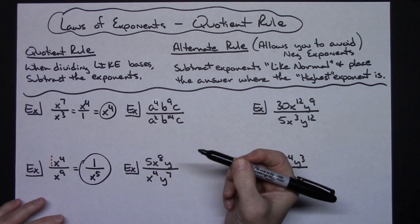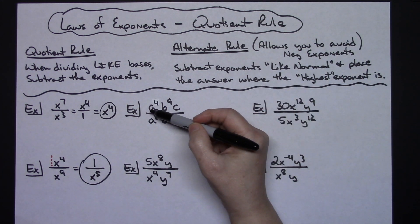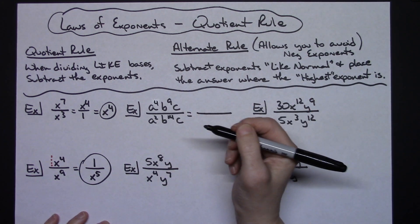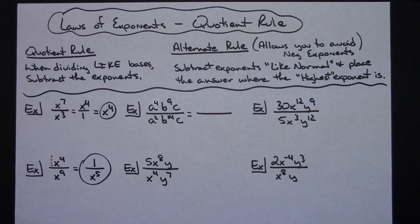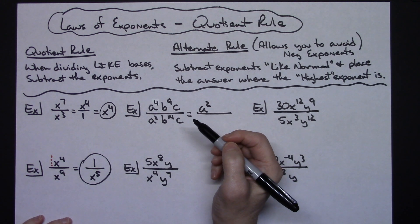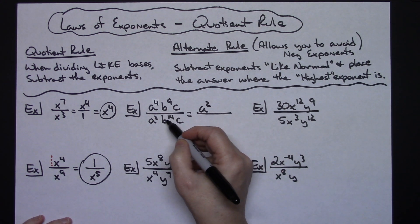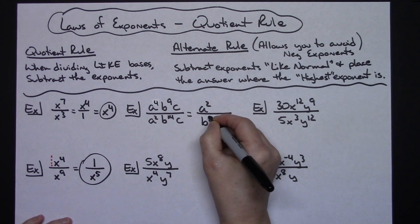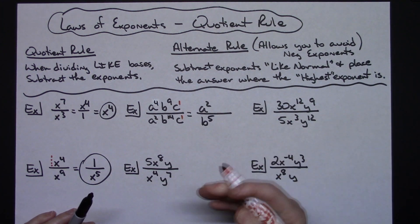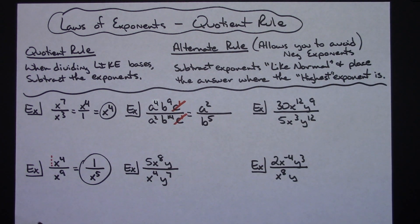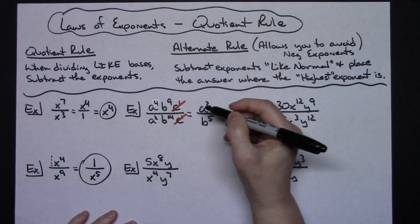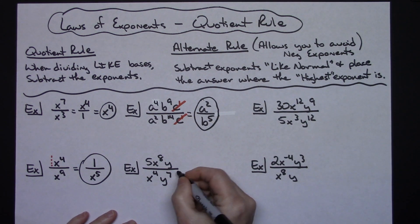For this multi-variable example, I apply the rule to each variable separately. For the a's: a to the fourth over a to the second — four minus two gives a squared in the numerator. For the b's: b to the ninth over b to the fourteenth — fourteen minus nine gives b to the fifth in the denominator since b to the fourteenth is larger. For the c's: c over c is just one, so c cancels out entirely. The final answer is a squared over b to the fifth.